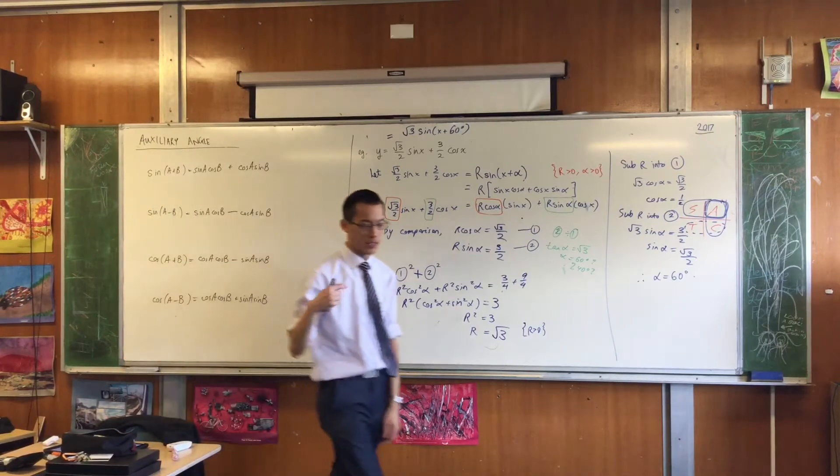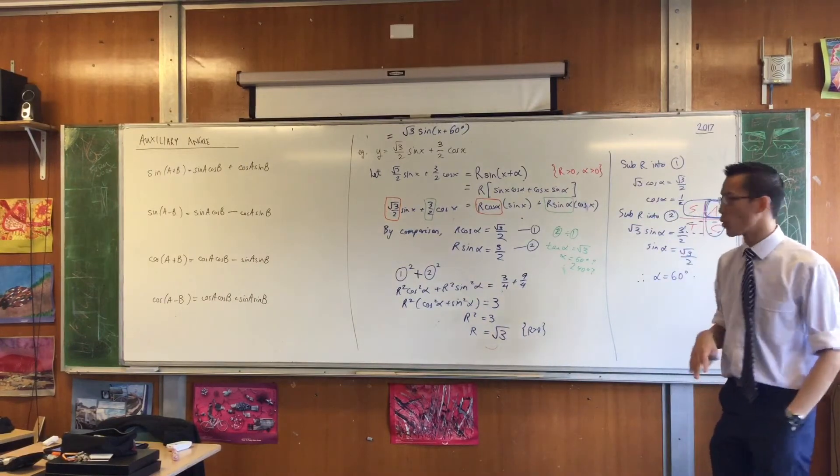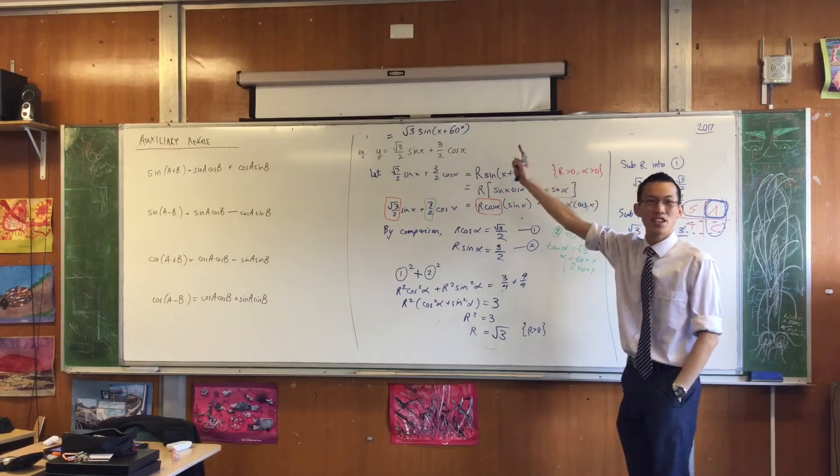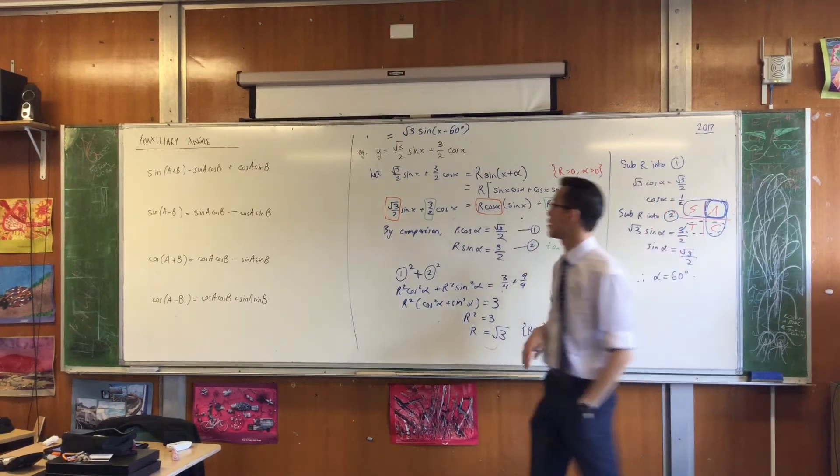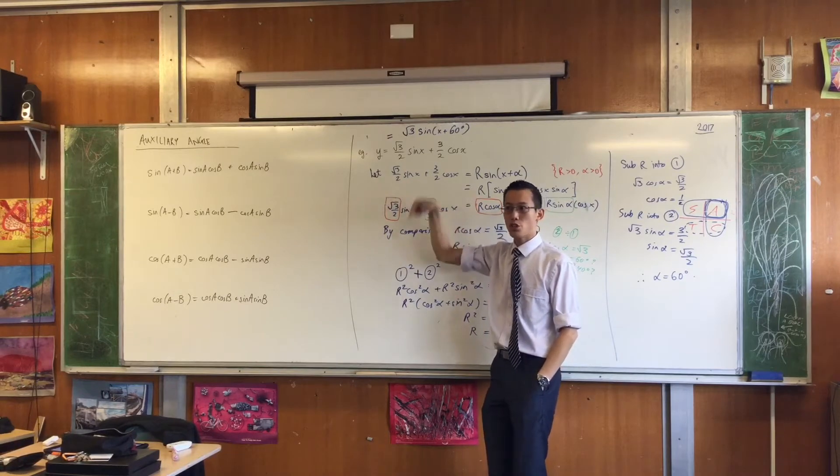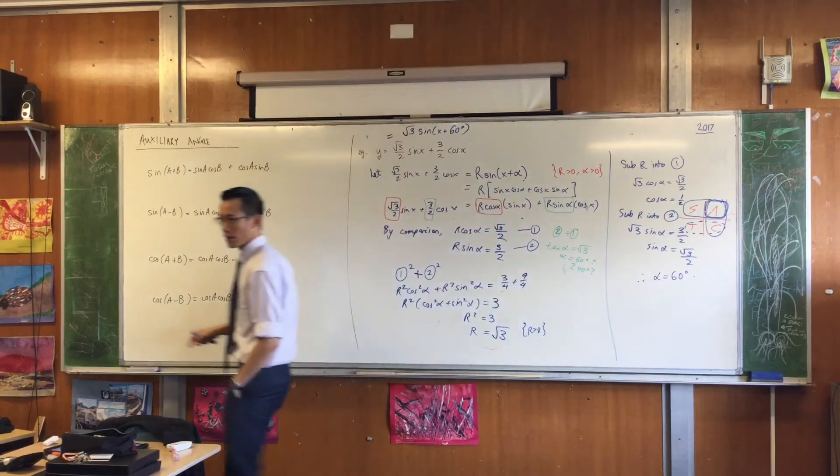I've written down the four sine and cosine expansions, and we used the first one because I constructed this question deliberately to fit the first one. Here's how I know. Underneath where you've written the first one, do you see why what you've got over here matches what you have over here?